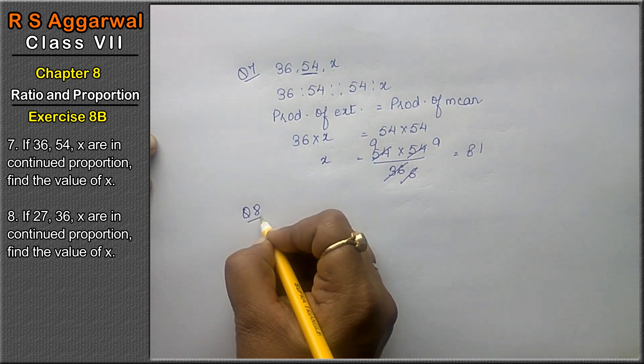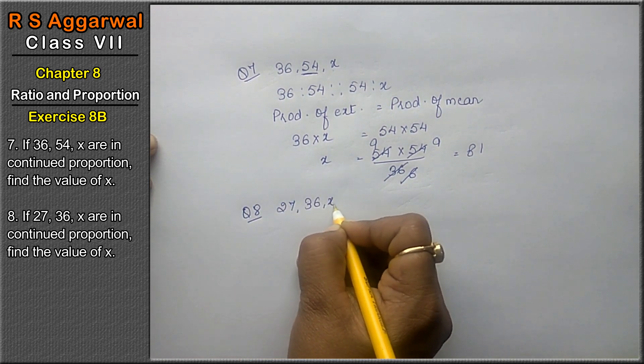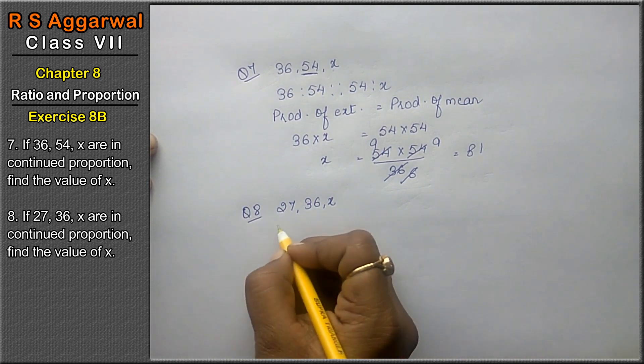Next question, question number 8. If 27, 36 and x are in continued proportion, find the value of x.